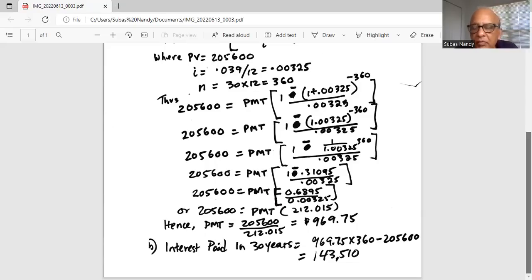And if she pays for 30 years, in total she's paying 360, because 30 years is 360 months, multiplied by the monthly mortgage amount, which is $969.75.